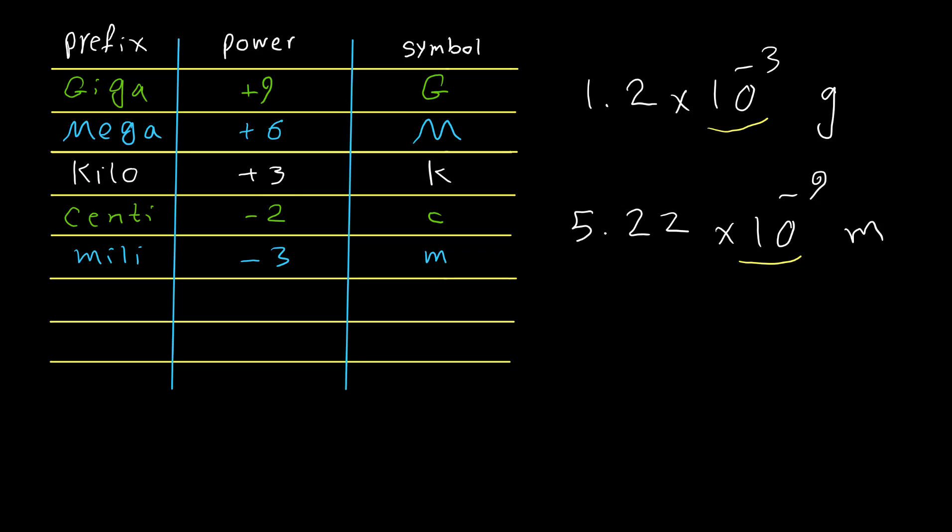As you can see here for mega and milli both of them is M, so it's very important to know is it uppercase or lowercase. Micro, negative 6 and symbol for micro is μ, we call it mu. Nano, negative 9, lowercase n. And pico, negative 12 and p.